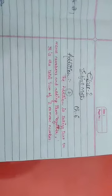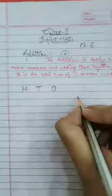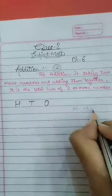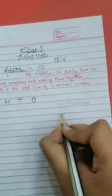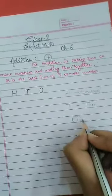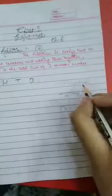I will try to explain you by doing a sum here. Here is H-T-O. So H-T-O stands for hundred, T stands for ten, and O stands for ones.